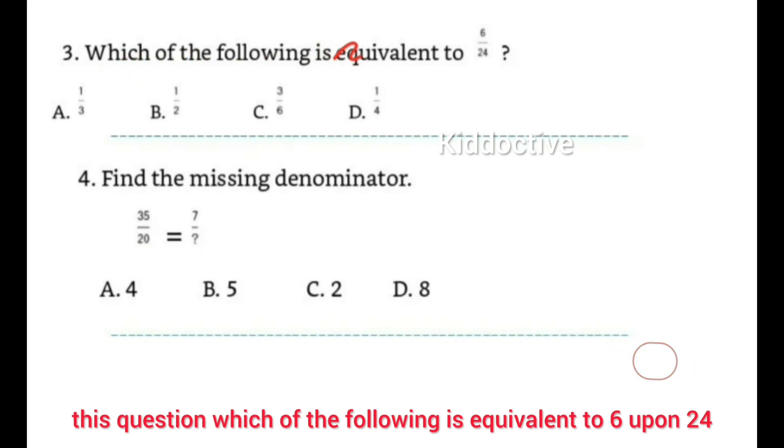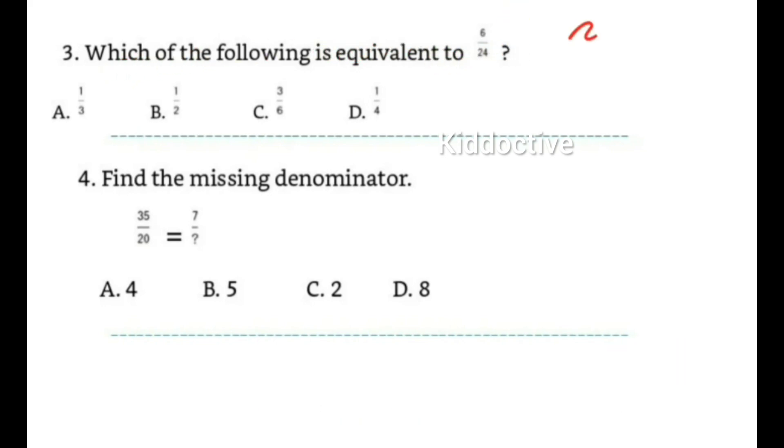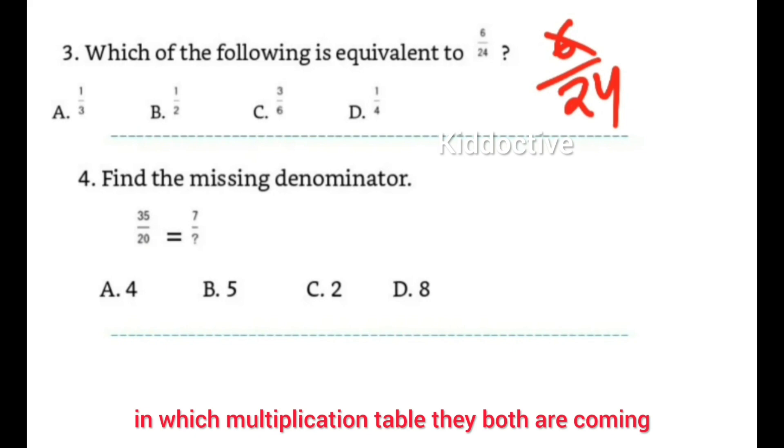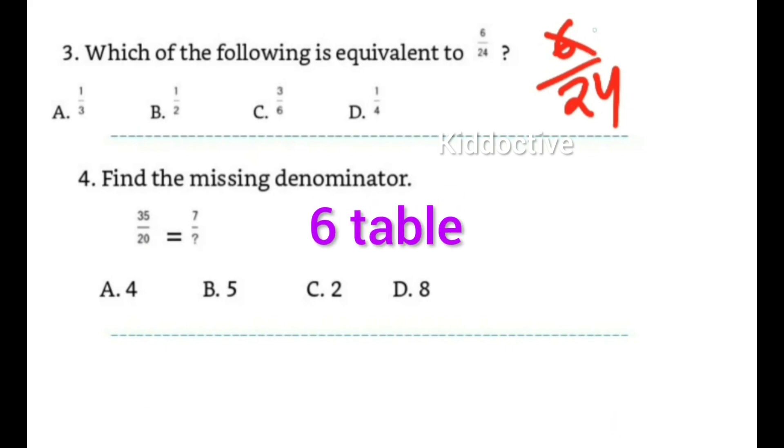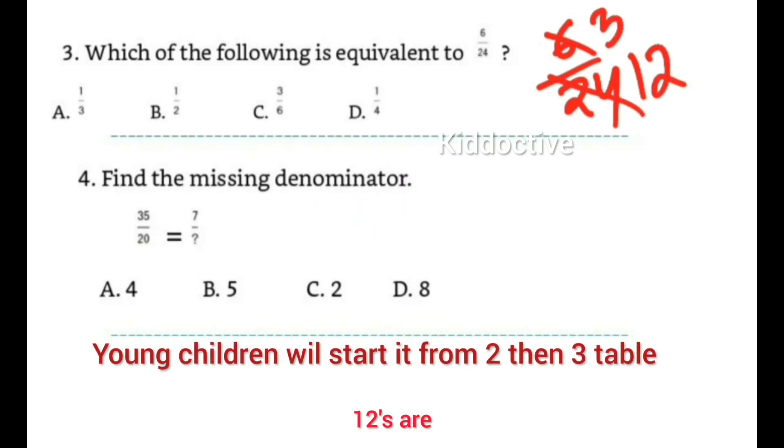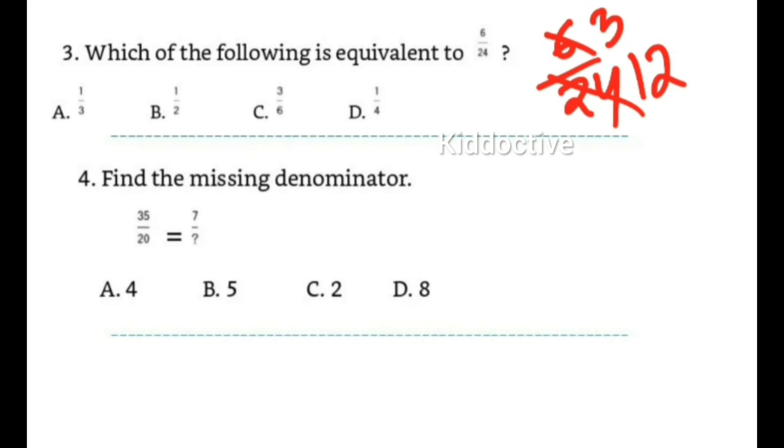This question: which of the following is equivalent to 6/24? We are going to cancel this. In which multiplication table do they both come? Yes, two threes are six, two twelves are 24. Then again we convert it: three ones are three, three fours are twelve, so 1/4.